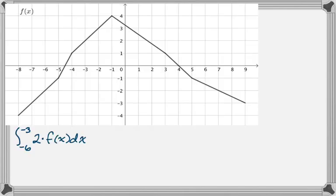We want to find the integral from negative six to negative three of two times f of x dx. There's a property of definite integrals that you can actually factor out a constant multiple. So I'm going to rewrite this as just two times the integral from negative six to negative three of f of x dx. And now it's just going to be two times whatever number the integral from negative six to negative three of f of x dx represents.